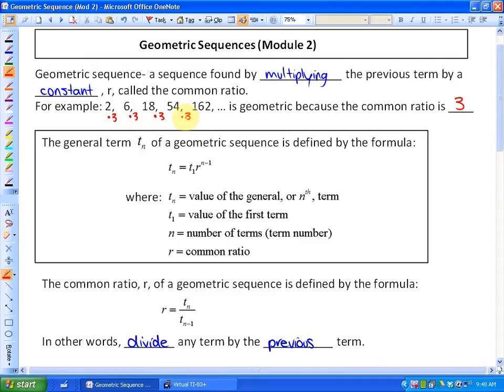The general term, which is known as Tn of a geometric sequence, is defined by the formula: Tn equals t1 times r to the n minus 1, where t1 is the value of the first term, n is the number of terms, and r is the common ratio. The description of each particular term is here.